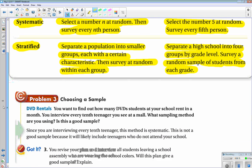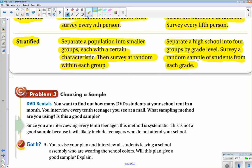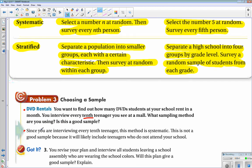So, let's take a look at an example of that. DVD rentals. You want to find out how many DVD students at your school rent in a month. You interview every 10th teenager you see at a mall. What sampling method are you using? Is this a good sample? The answer is, since you are interviewing every 10th teenager, this method is systematic. This is not a good sample because it will likely include teenagers who do not attend your school.